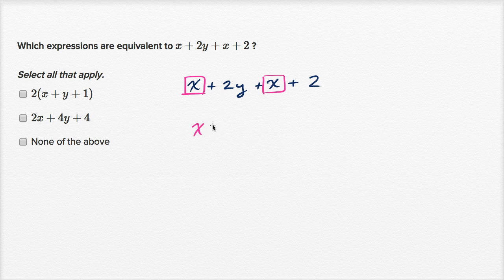So let me not skip any steps. That's x plus x plus 2y. Now I'm just switching the order, plus 2. And then these two x's right over here, I can just rewrite that as 2x. So I have 2x plus 2y, plus 2y plus 2.